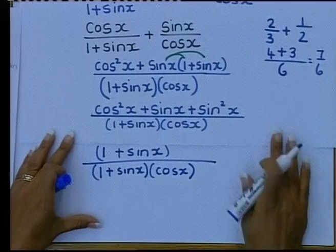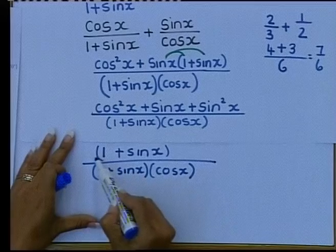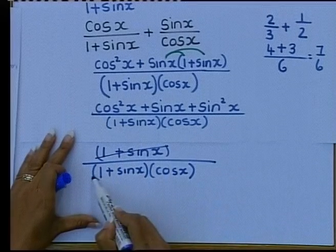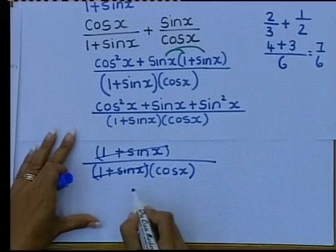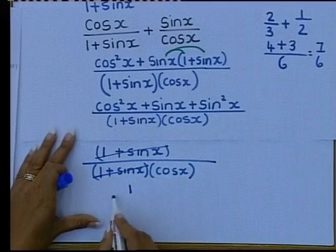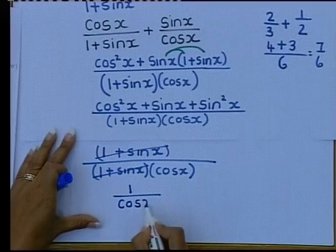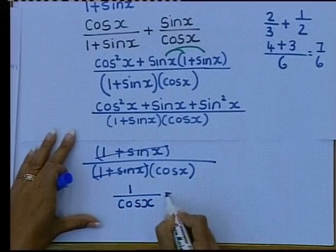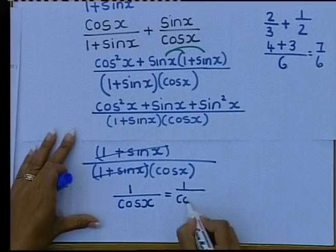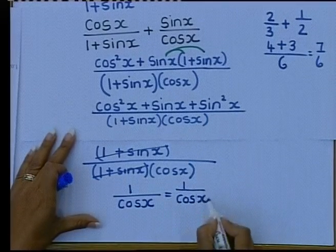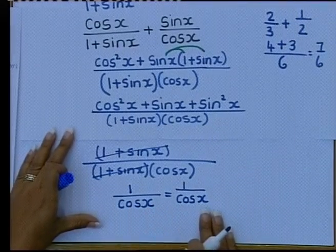Can I cancel? Of course you can cancel. There are no signs separating those brackets. 1 plus sin x can cancel with that 1 plus sin x. What do I have left on top? 1 over, what do I have left at the bottom? Cos x. And you breathe a sigh of relief because what do you see? It is equal to my right-hand side. 1 over cos x is equal to 1 over cos x and you have just proven it.